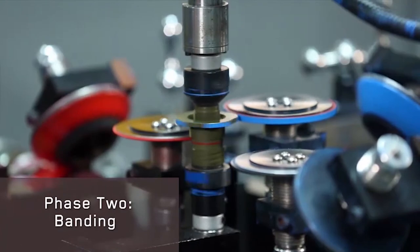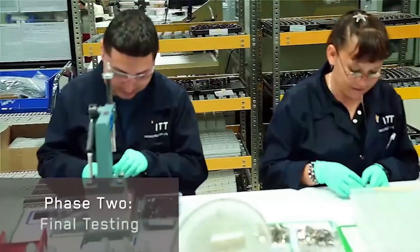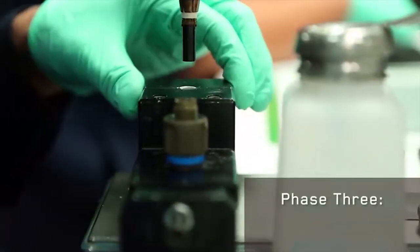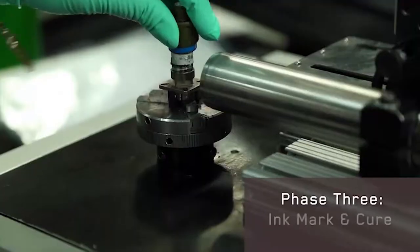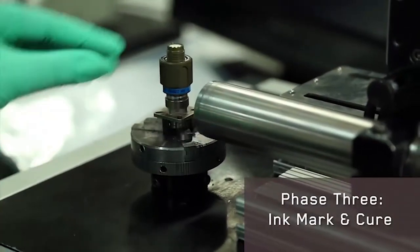Here we have banding, curing, barrel assembly, and final testing. We bond the insulator into the chill. We verify 100% of the parts, we ink mark, and then we cure.